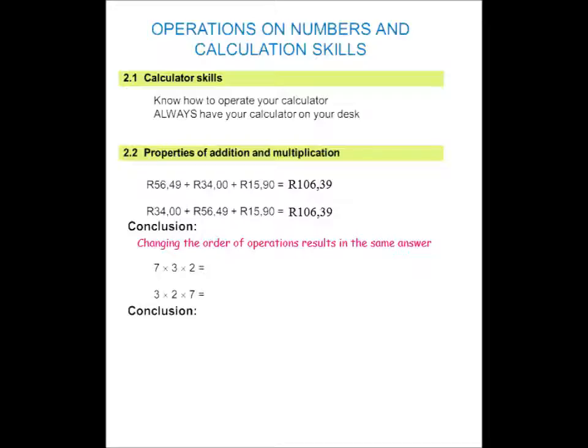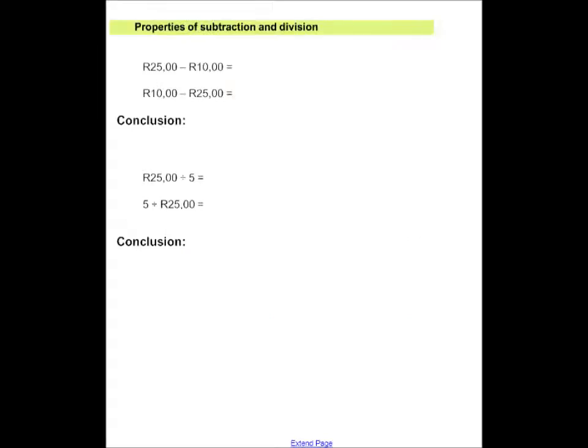Well, let's see what happens when we multiply. 7 times 3 is 21. 21 multiplied by 2 is 42. 3 times 2 is 6. 6 times 7 is 42. So once again, my answer is the same. So changing the order of operations results in the same answer once again. So when multiplying and adding rows or lists of numbers, you are able to change the order in which you add or the order in which you multiply without changing the final result.